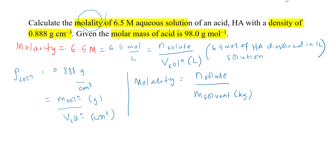We are given molarity and density of the solution. To find molality, we need the number of moles and the mass of solvent. Both values are not given directly. We can use 6.5 mol as the number of moles of solute, since that is the moles of acid dissolved in one liter of solution. But we still need the mass of solvent.